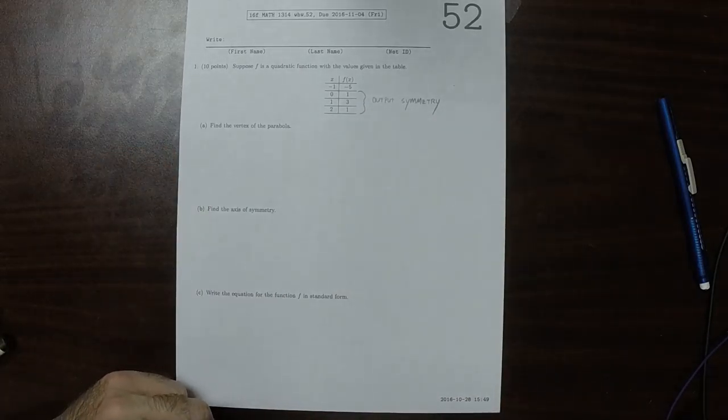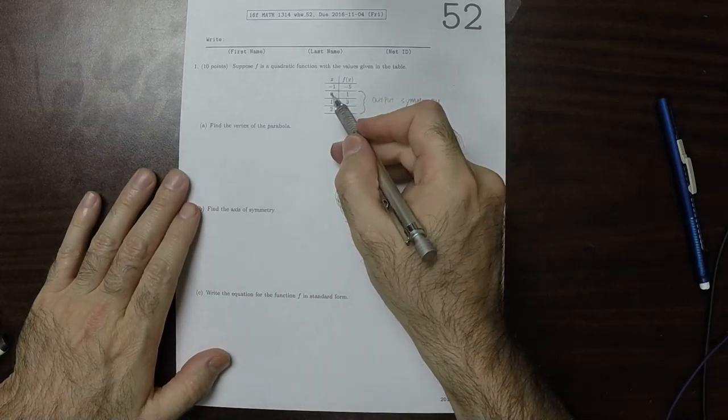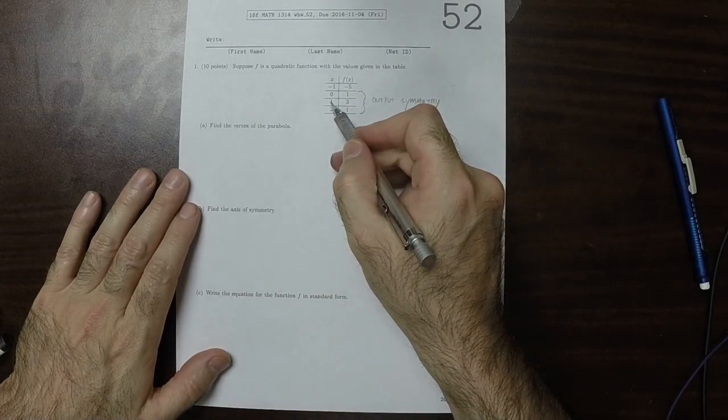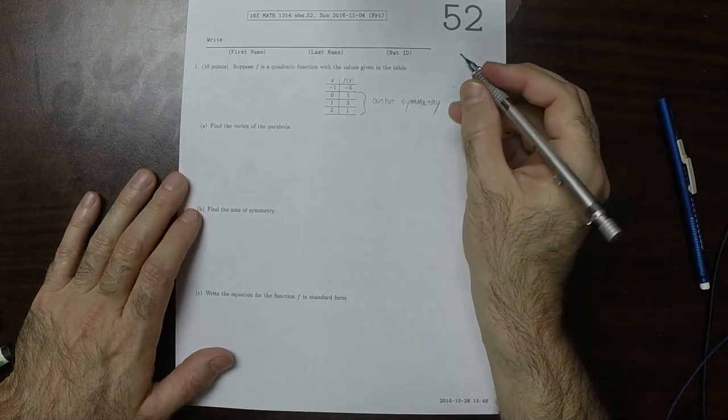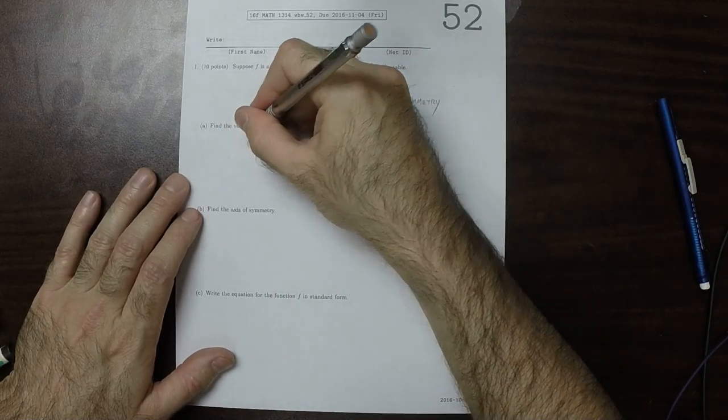So it outputs a 1 and then a 3 and then a 1 again. Well, the fact that it outputs a 1 at 0 and 2 means that the vertex has to be right in the middle, and 1 is right in the middle, so the vertex of the parabola is 1, 3.